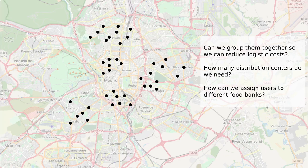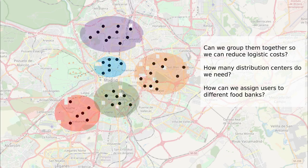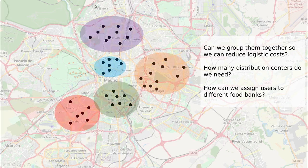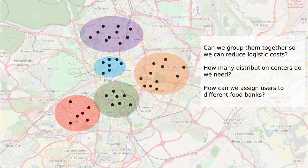Can we group them together so we can reduce logistic costs, or even how can we assign users to different food banks? This is a classical problem of clustering. Our human brain is really good at creating clusters. If you take this data, you could say you can group them together according to these ellipsoids. For a computer, this is actually a much harder problem to solve.